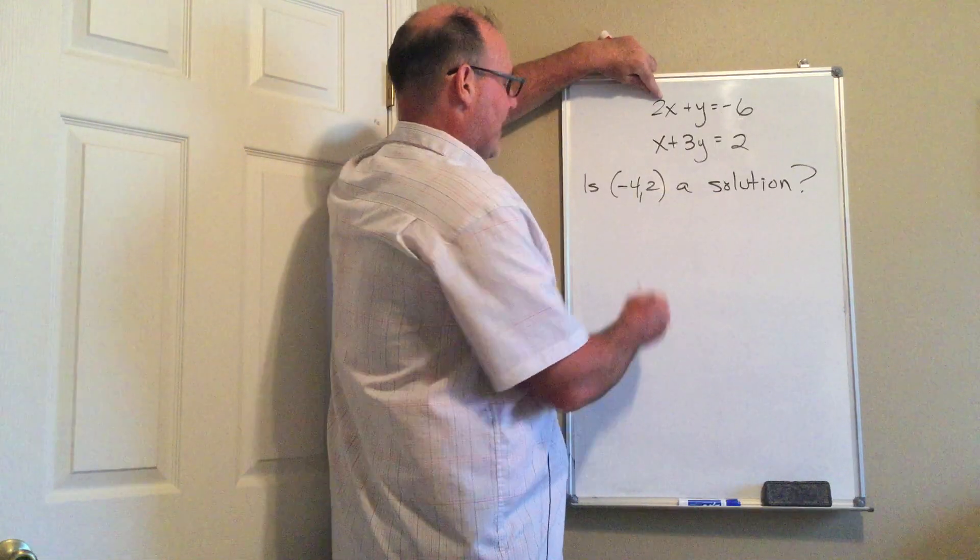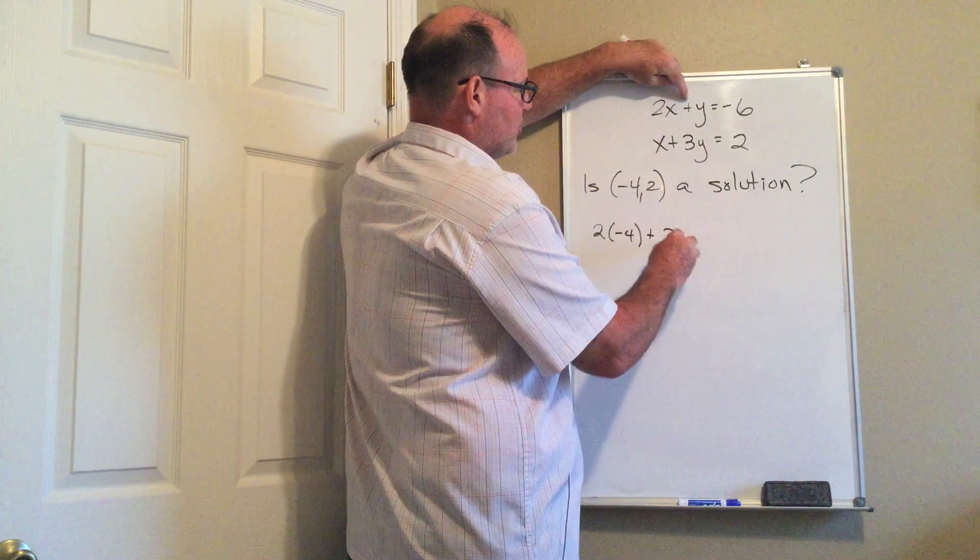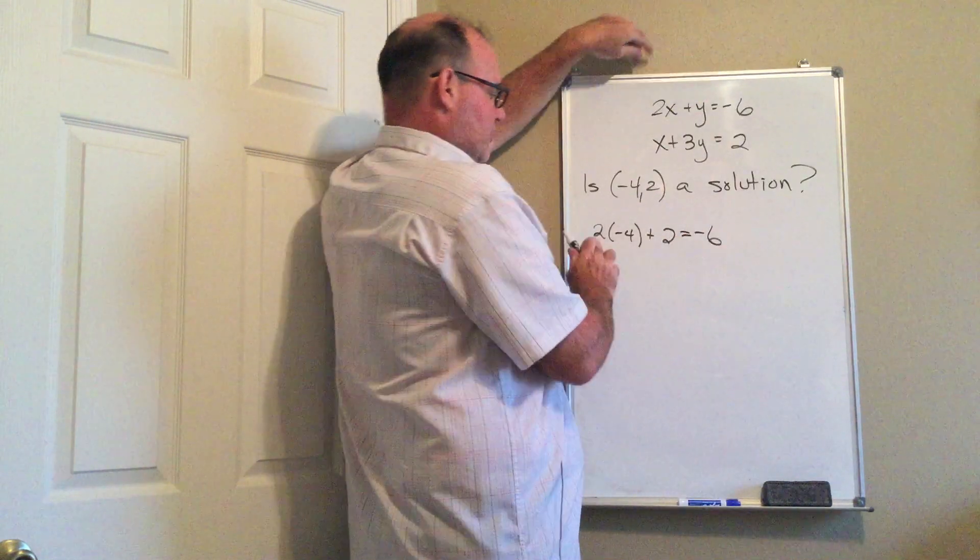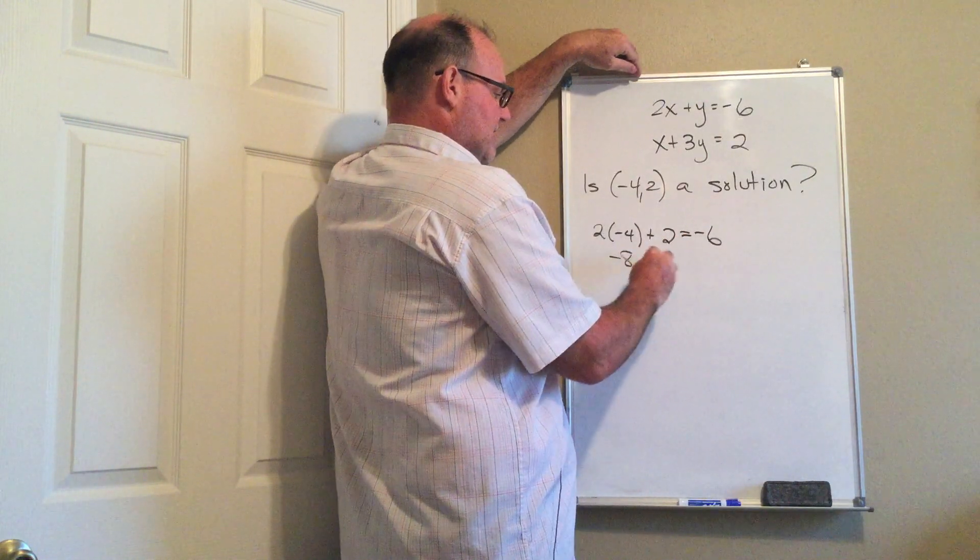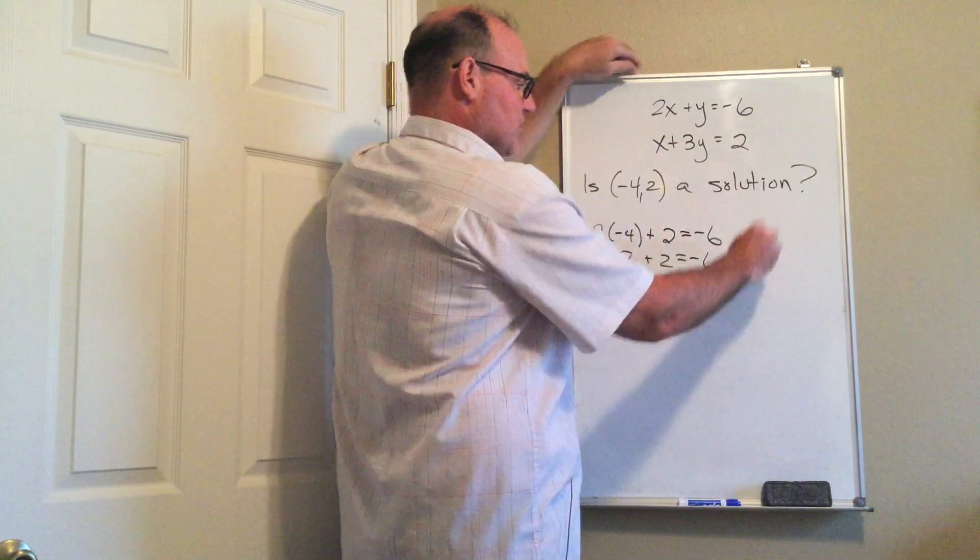For my top equation I have 2 times (-4) plus 2. 2 times (-4) is (-8), and (-8) plus 2 is (-6). So so far so good.